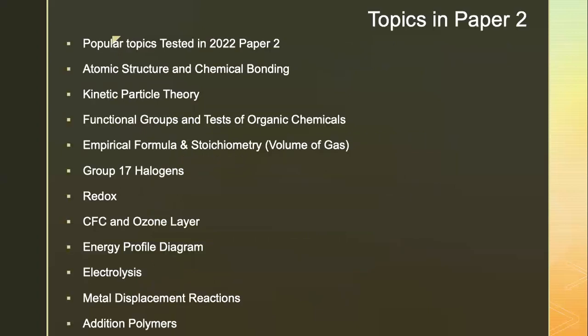In summary, the popular topics for paper 2 last year were: atomic structure and chemical bonding, kinetic particle theory, functional groups and tests of organic compounds, empirical formulas, stoichiometry with a focus on volume of gas, group 17 halogens, redox, CFC and ozone layer, energy profile diagram, electrolysis — which came out in both either/or questions — metal displacement reaction, and addition polymers in the database question.